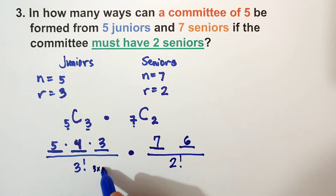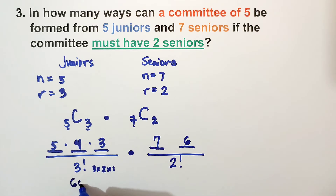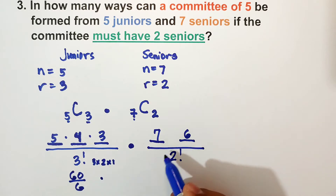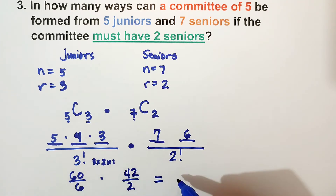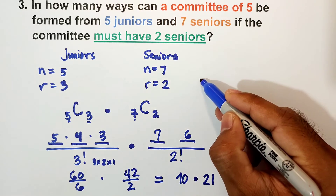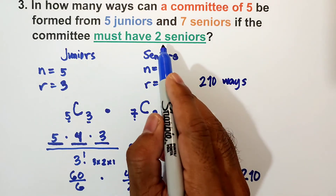Three factorial is three times two times one, which is six. Five times four times three is sixty, divided by six is ten. Seven times six is forty-two, divided by two is twenty-one. Ten times twenty-one equals two hundred ten. So there are two hundred ten ways of choosing a committee of five wherein two are seniors.